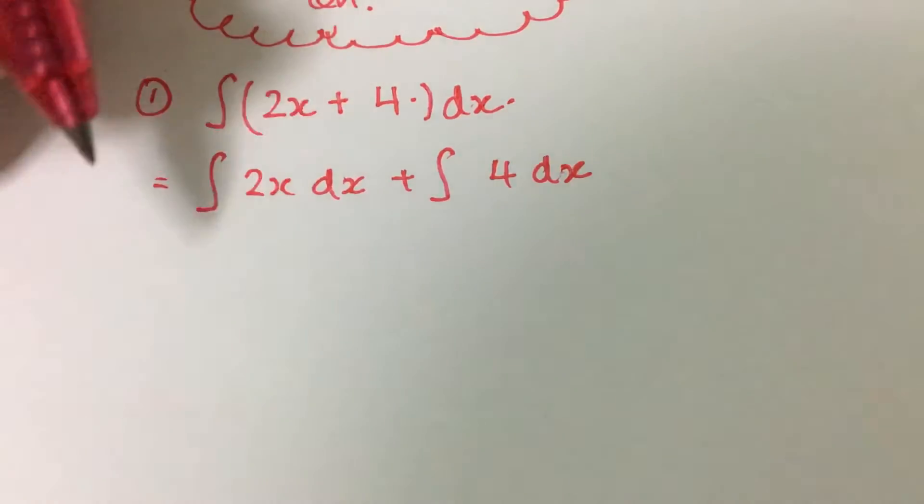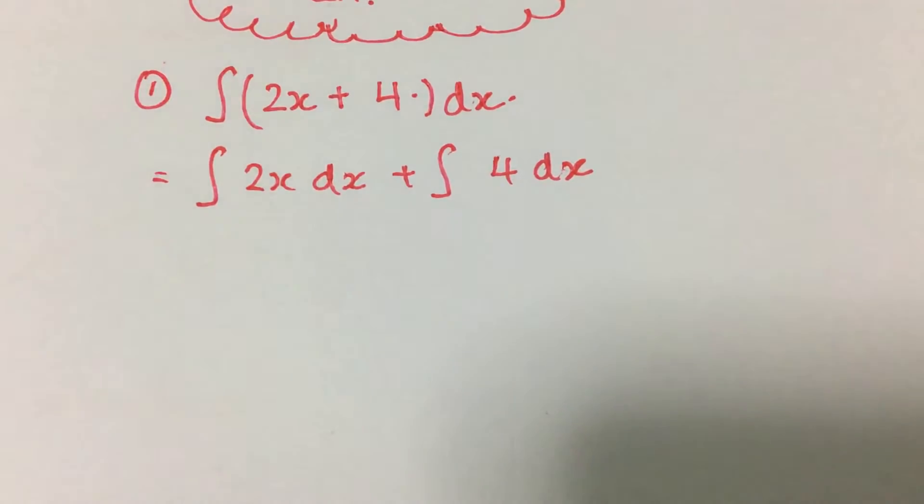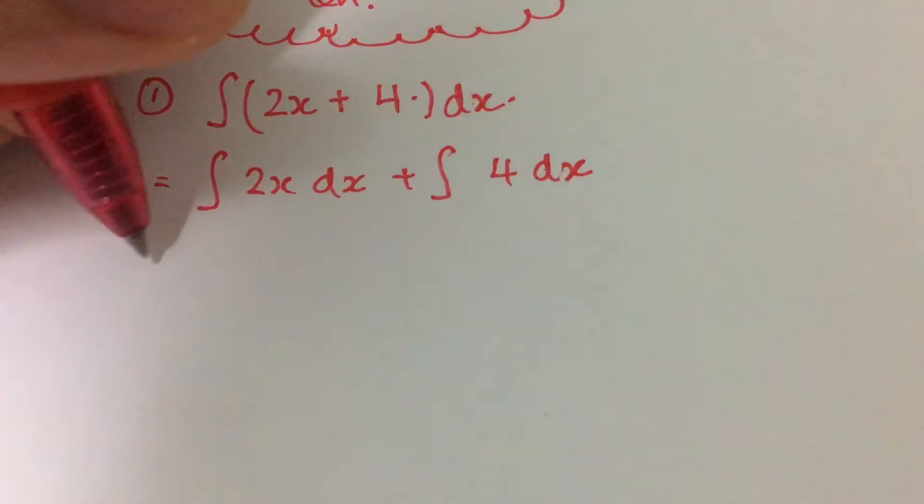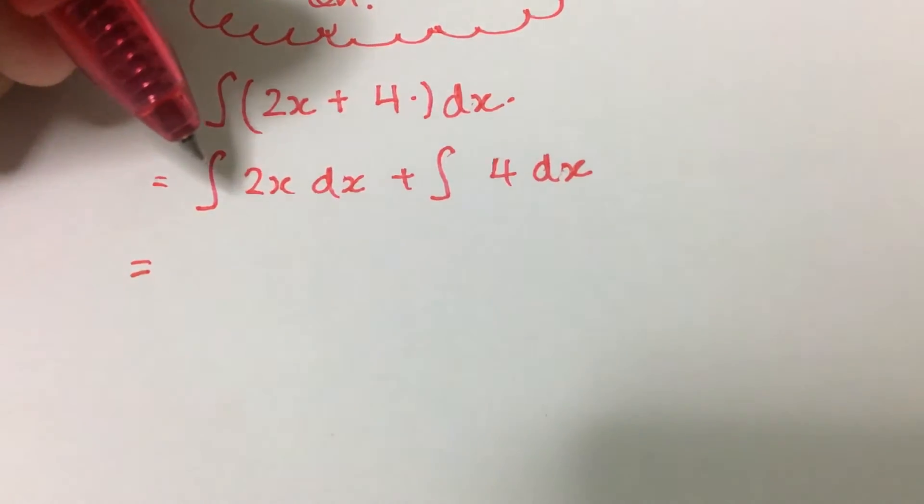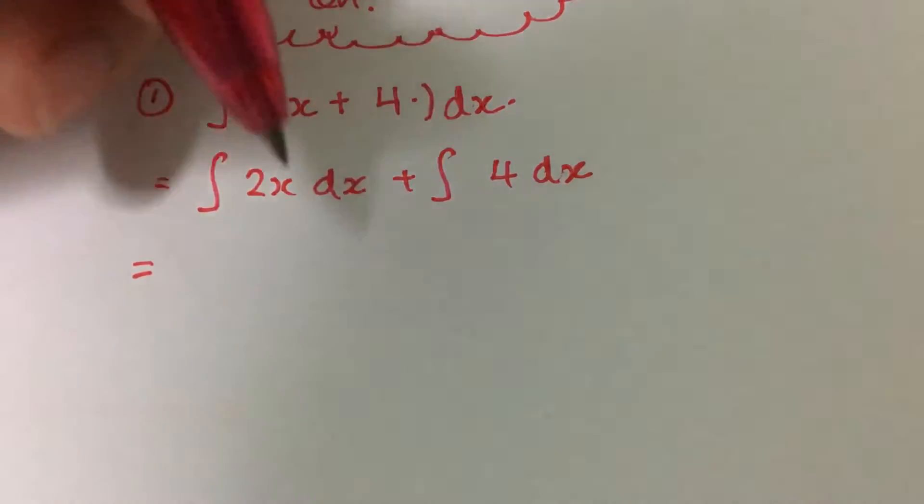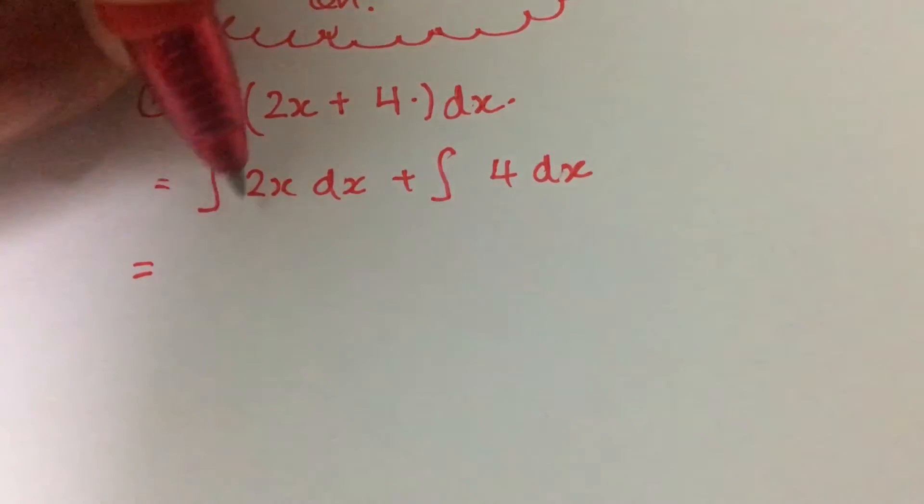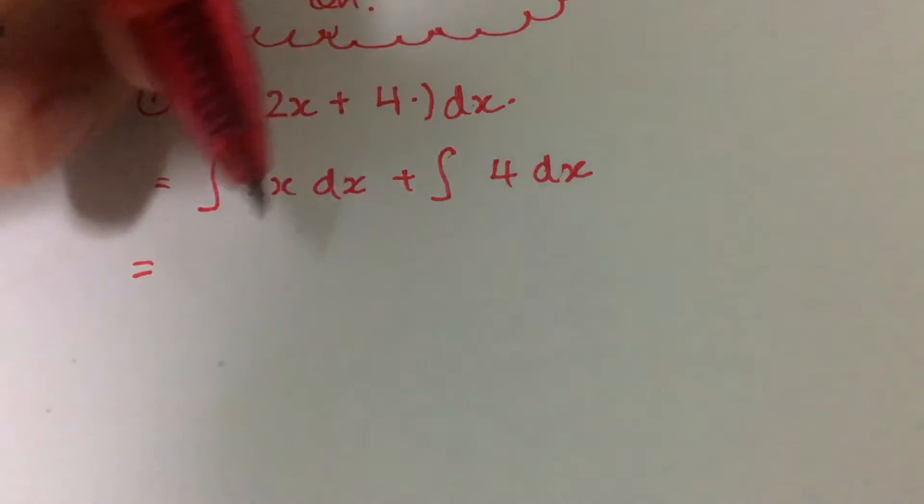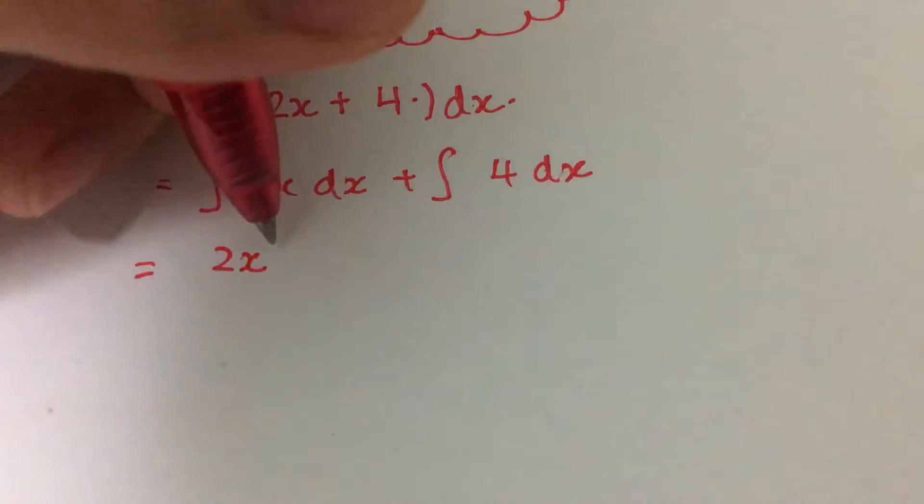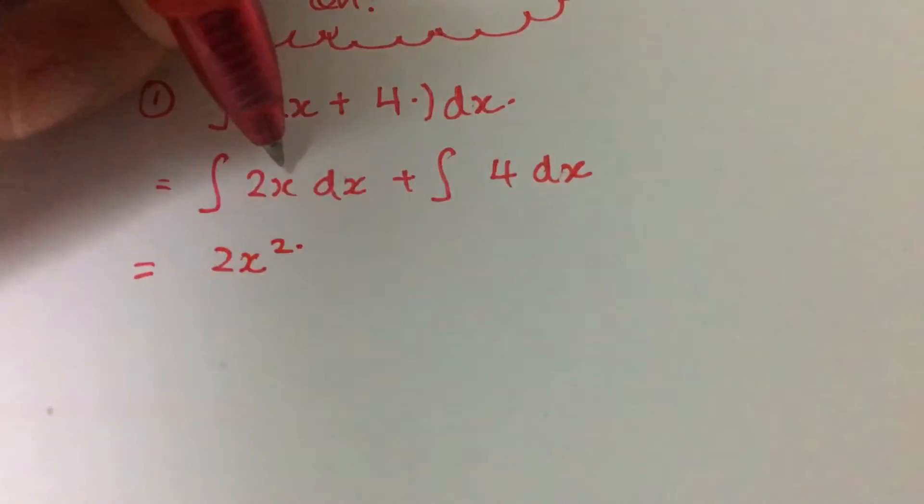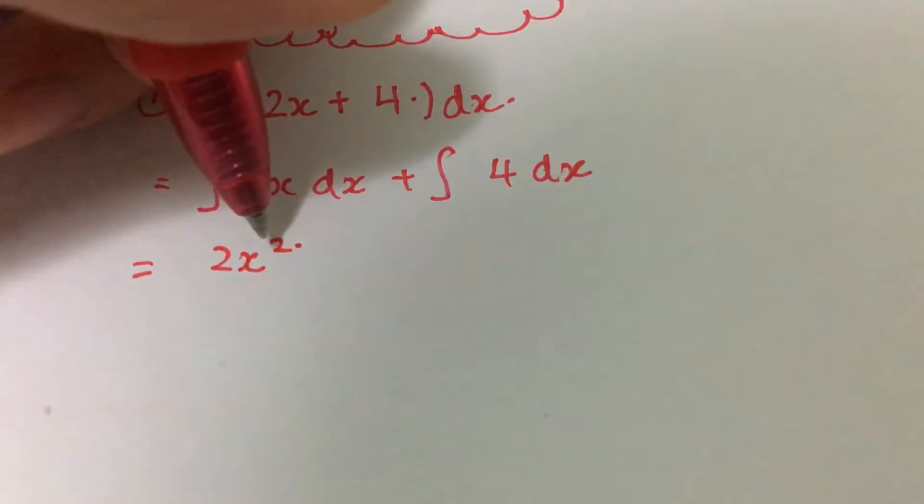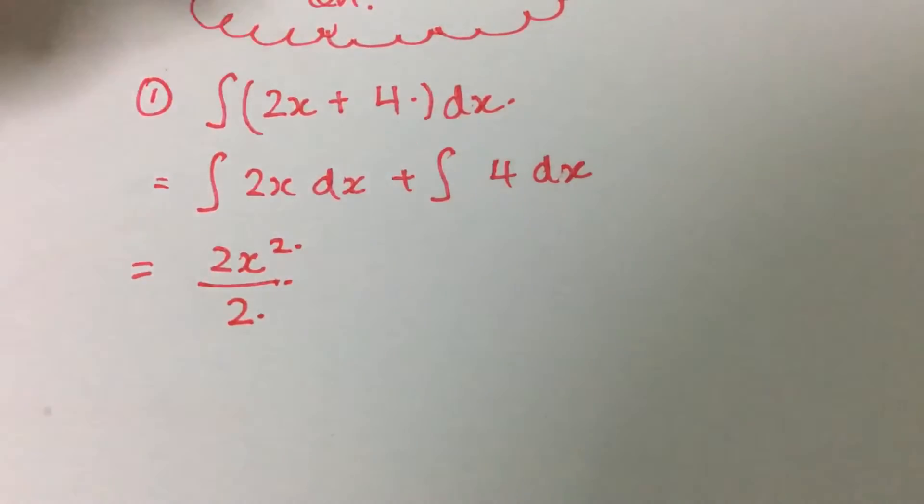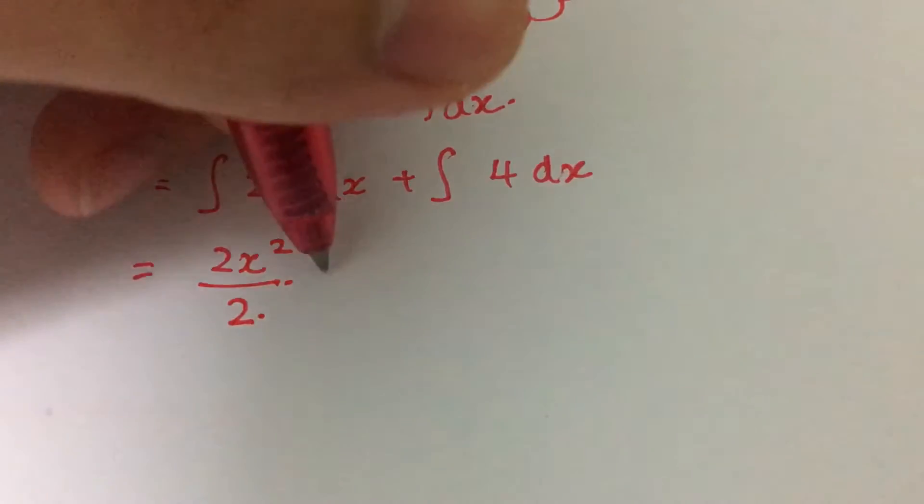For the integration of 2x, after we integrate 2x we have to simply add plus 1 to the power itself, so that will be 2x squared because this is x to the power 1 and we plus 1 it becomes x squared. At the same time, we have to divide by the power, so that will be divided by 2. These two represents from the power itself.